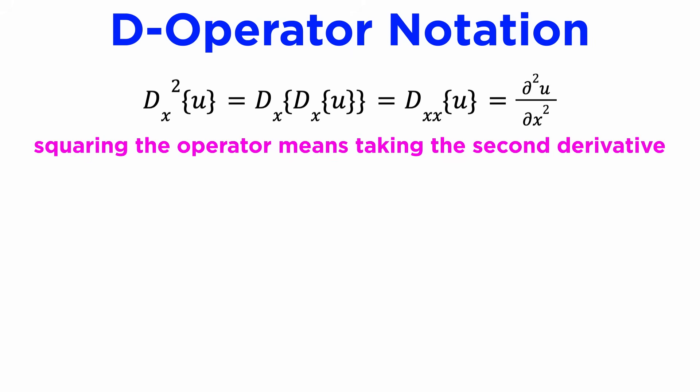D squared means apply the D operator twice to whatever's in front, so for D_x squared it means D_x of D_x, which is the second derivative with respect to x.